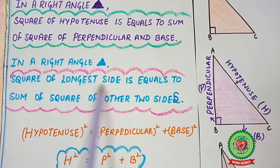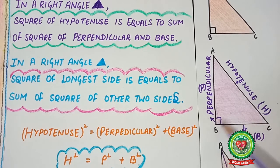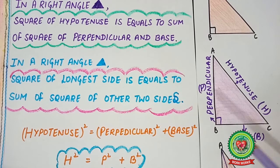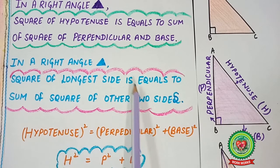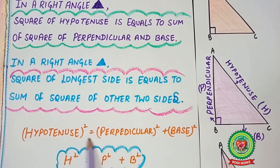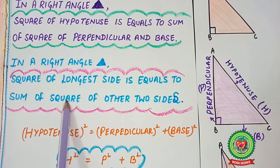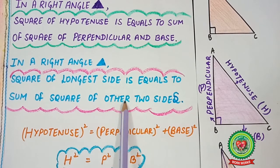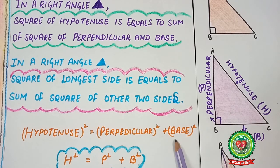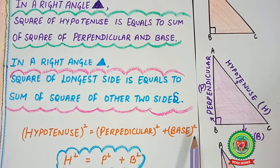The longest side is the side opposite to the right angle, which is the hypotenuse. So, the square of the longest side — hypotenuse squared — equals the sum of the squares of the other two sides. Sum means plus: you will put the square of the other two sides, which are perpendicular and base. So the Pythagoras theorem is: hypotenuse squared equals perpendicular squared plus base squared.